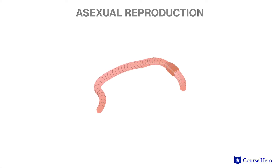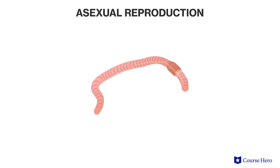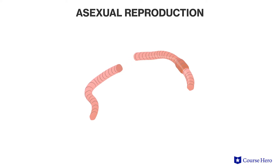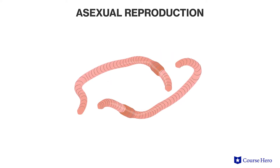For example, flatworms undergo a process called fragmentation in which they divide in two. Each half then regenerates into a new flatworm which is identical to the original.